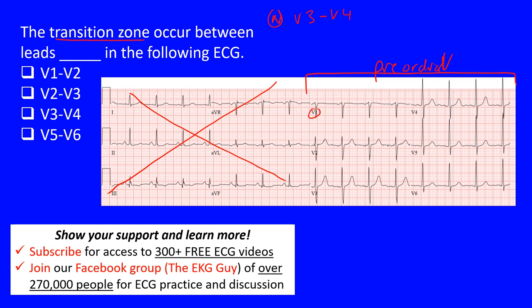If you look at V1, the QRS complexes are mostly negative. V2, comparing the positive to negative portion, is also mostly negative. When you go to V3, comparing the negative to positive portions, it's almost isoelectric — it may be a little more negative or slightly more positive. When we get to V4, we can certainly see it's slightly more positive. V5 is more positive, and V6 is certainly more positive.